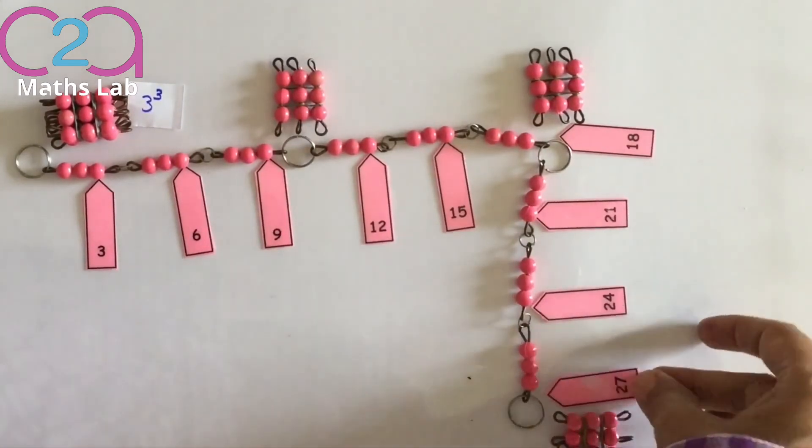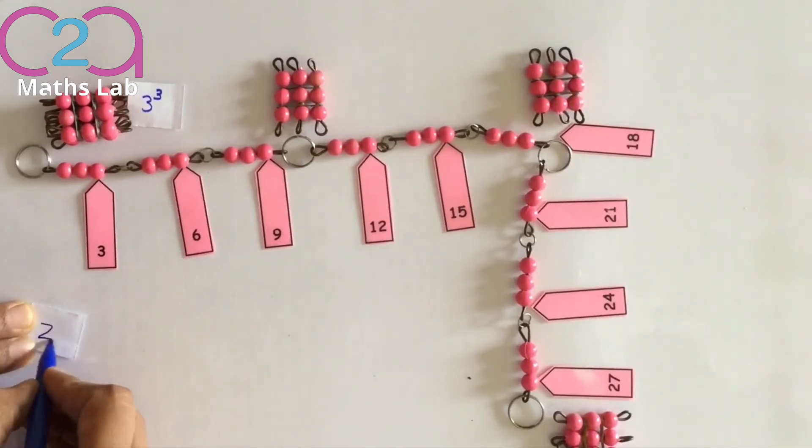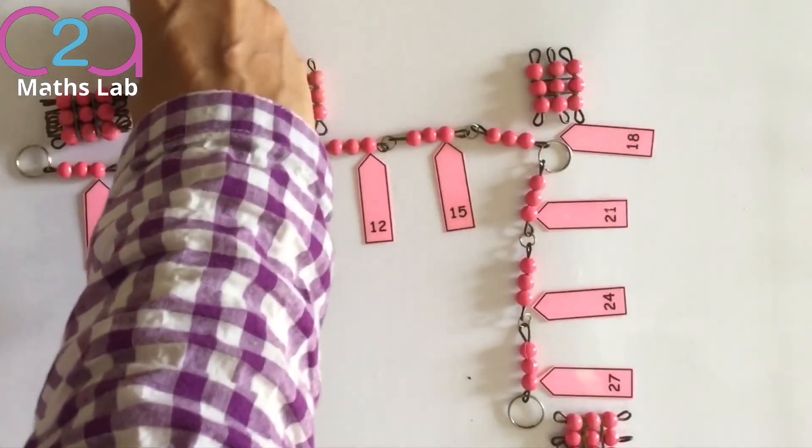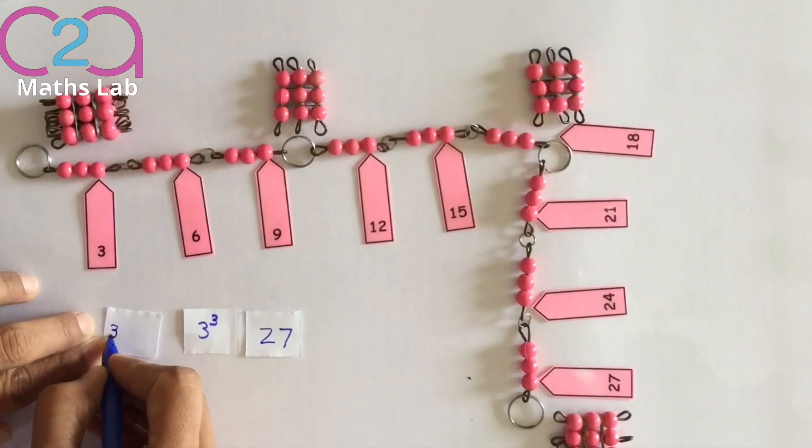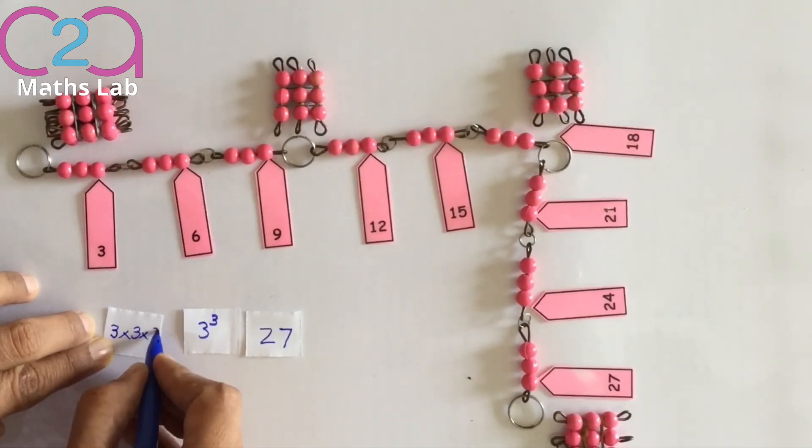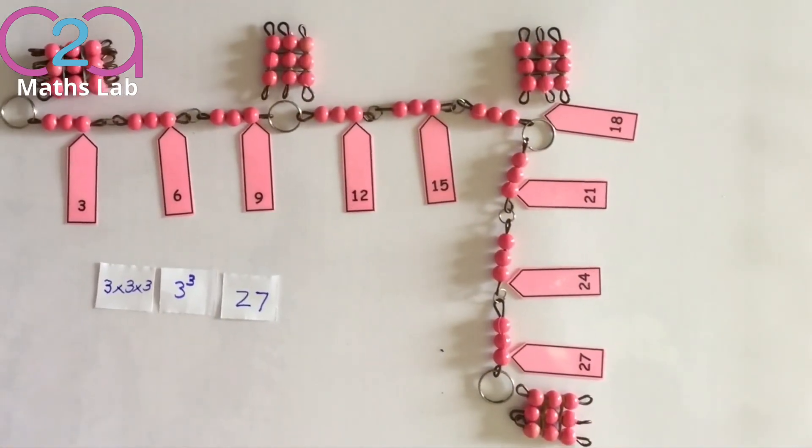So there are 27 beads in a cube of 3. So cube of 3 is 27. We can also write 3 multiplied by 3 multiplied by 3. So a cube of 3 has 27 beads.